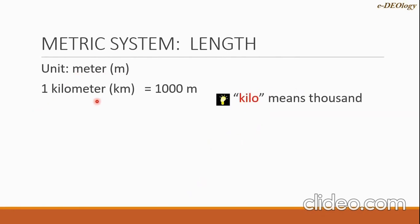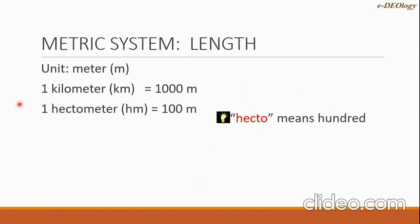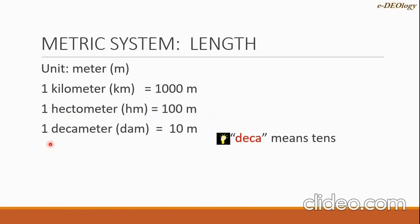The first unit is kilometer, with symbol km. One kilometer equals one thousand meters — note that 'kilo' means thousand. The next is hectometer, with symbol hm. One hectometer equals 100 meters — 'hecto' means 100. Next is decameter, with symbol dam. One decameter equals 10 meters — 'deca' means ten.